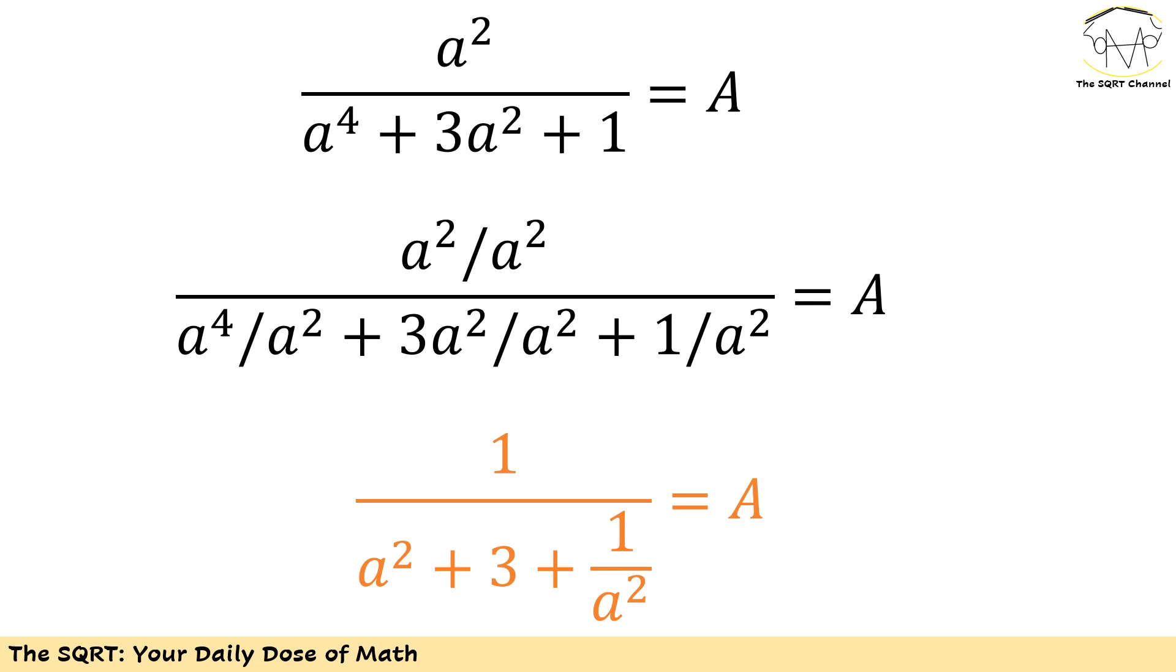Basically if I divide everything by a squared I'm going to end up with 1 over a squared plus 3 plus 1 over a squared equals to A, or the thing that I need to find.